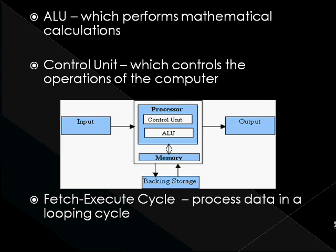Fetch involves retrieving an instruction from program memory. The instruction that the CPU fetches from memory is used to determine what the CPU is to do. In the decode step, the instruction is broken up into parts that have significance to other portions of the CPU. After the fetch and decode steps, the execute step is performed. During this step, various portions of the CPU are connected so they can perform the desired operation. An example of a fetch-execute cycle has been illustrated in the next slide.